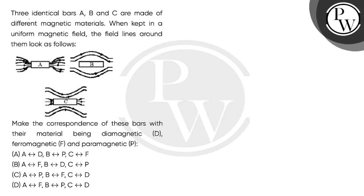Hello children, let's read the question. Three identical bars A, B and C are made of different magnetic materials. When kept in a uniform magnetic field, the field lines around them look as follows.